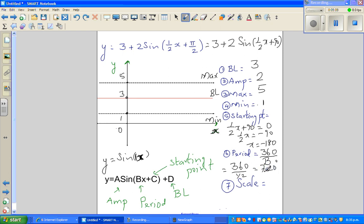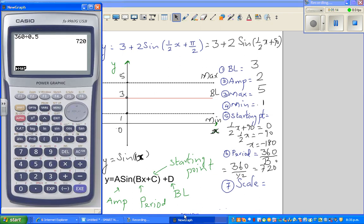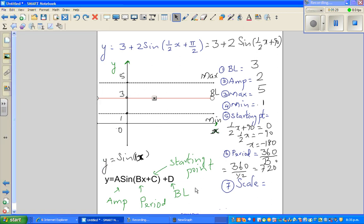You've got a full cycle of 720. For those who don't know how to divide 360 by half, you can do it on the calculator. 360 divided by 0.5, or you can go 360 divided by half, that's 720.